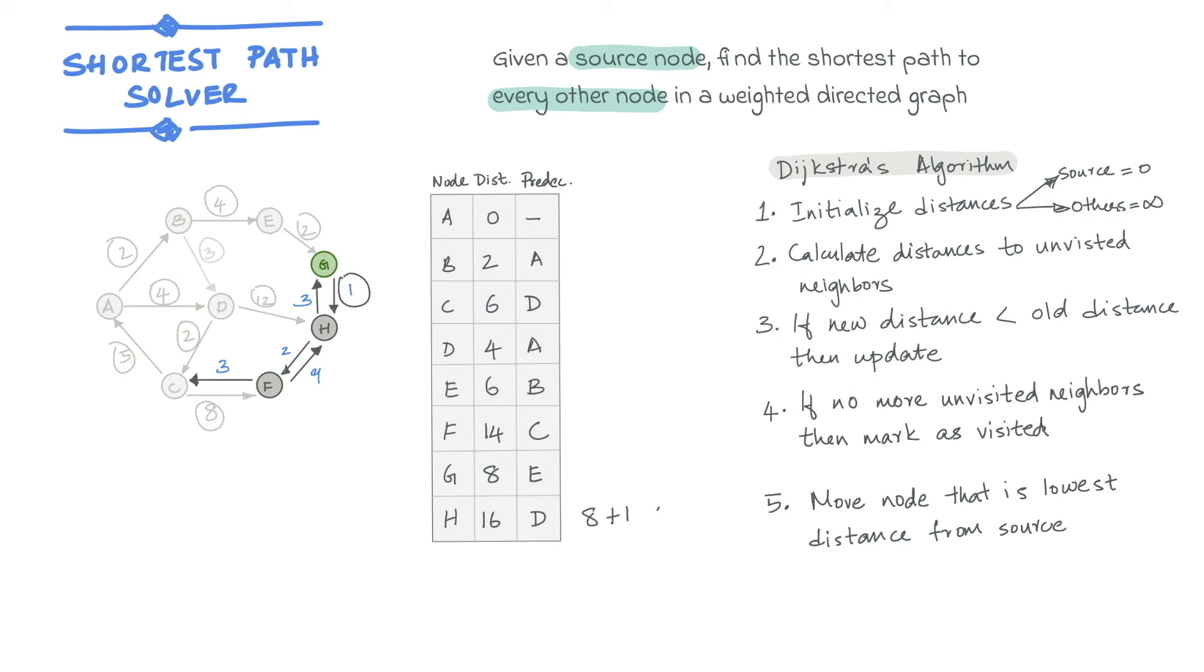Now this is lower than the current distance value of 16. So we update the distance to 9 and change the predecessor node from D to G, and mark G as visited.